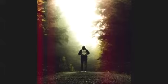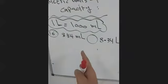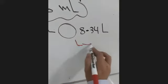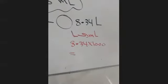We start from the liter. The liter is greater than the milliliter, so we turn the liter to milliliter. We want to turn 8.34 liters to milliliters. We multiply by 1,000. How do we multiply a decimal by 1,000? We push the decimal to the right three digits. I have two digits here, so I need to add a zero.